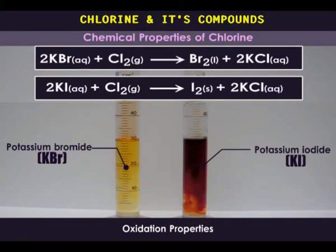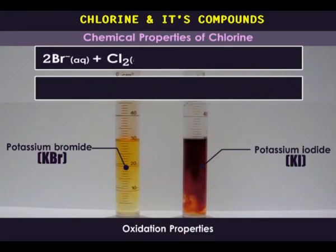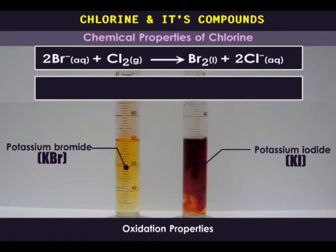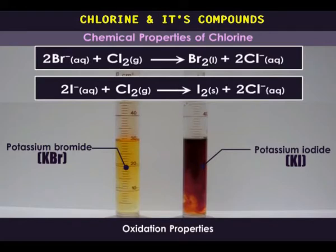Both of these cases are oxidation-reduction reactions. In the first one, chlorine oxidizes bromide ions to elemental bromine, and chlorine is itself reduced to chloride ions. In the second reaction, chlorine oxidizes iodide ions into elemental iodine. Chlorine is a stronger oxidizing agent than both bromine and iodine, because chlorine is more electronegative than both bromine and iodine.